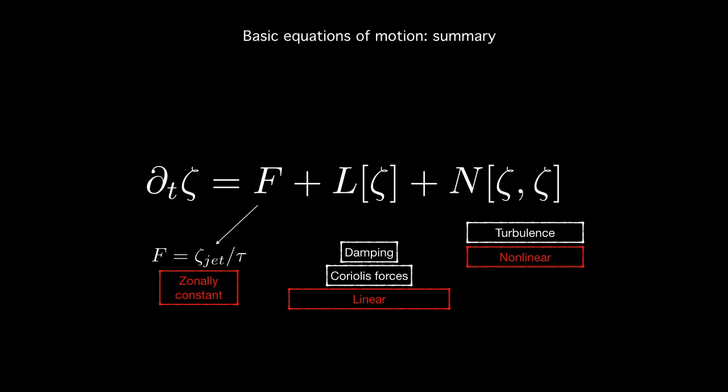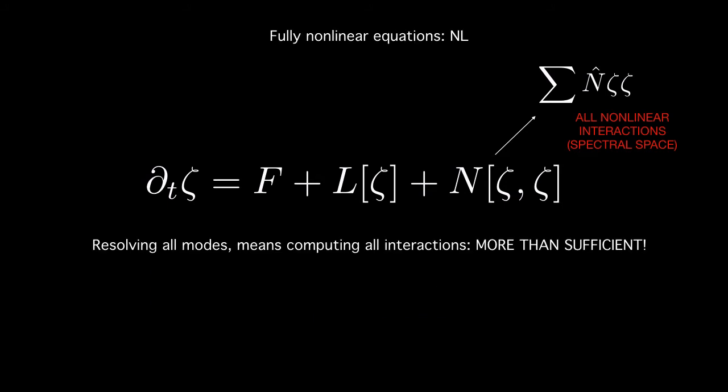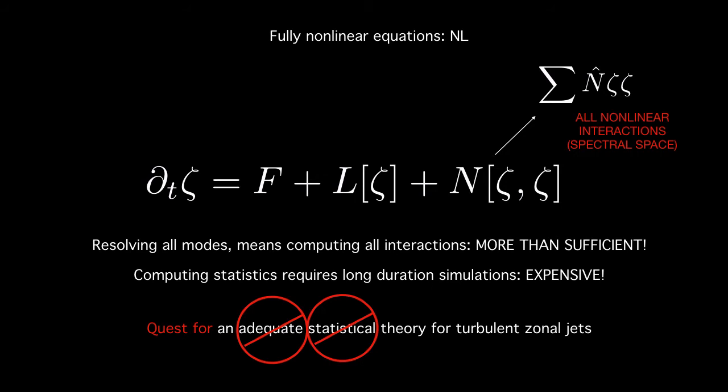Now in this fully non-linear set of equations the non-linear term essentially consists of the sum total of all possible interactions in spectral space between the various modes. As DNS folks among you might know that resolving all these modes is expensive in itself however computations of these can be more than sufficient especially when we're interested only in the zonal mean quantities. Moreover if we are to capture statistics from these equations we have to integrate these equations for long durations and that turns out to be doubly expensive. So in our quest for an adequate statistical theory the fully non-linear equations turn out to be neither adequate nor statistical.